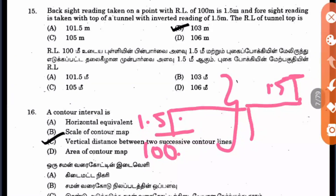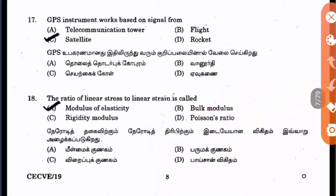Question 16: The contour interval is the vertical distance between two successive contour lines. For example, if you have a 2-meter contour and then a 2.2-meter contour, the contour interval is 0.2 meters — it is the vertical distance between contour lines.